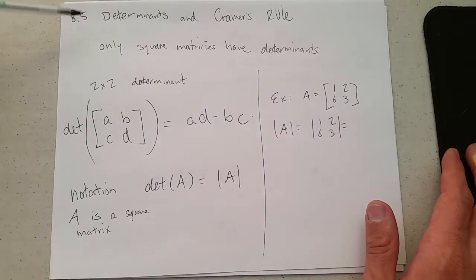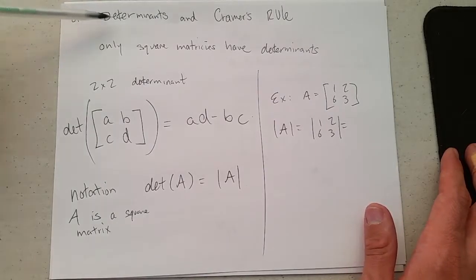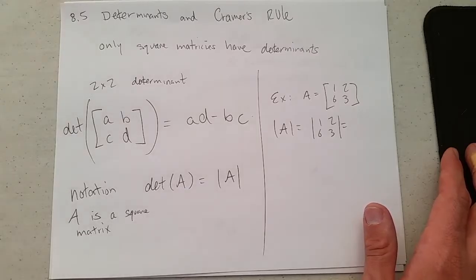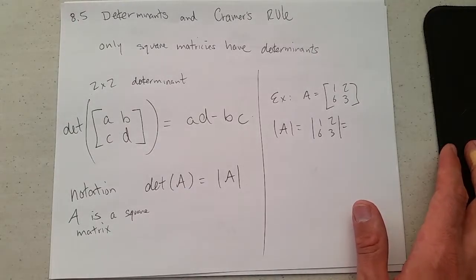Determinants and Cramer's Rule. We're going to do determinants first, and then Cramer's Rule is an application of determinants. Only square matrices have determinants.